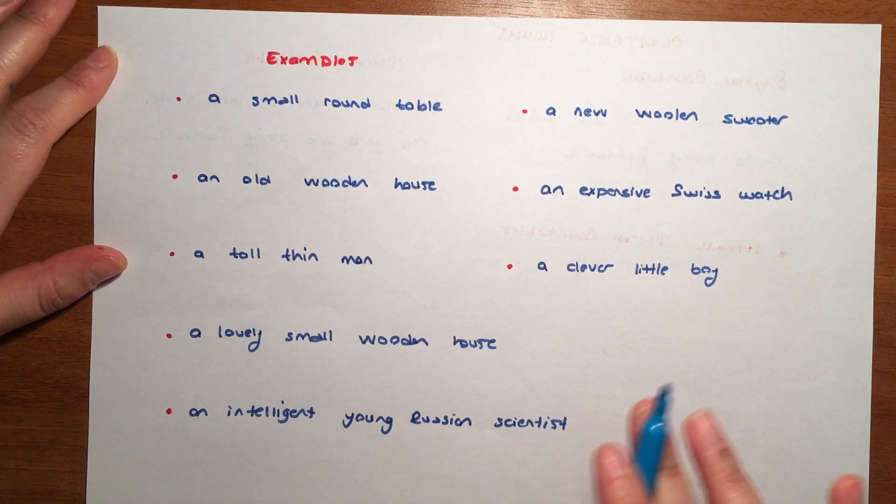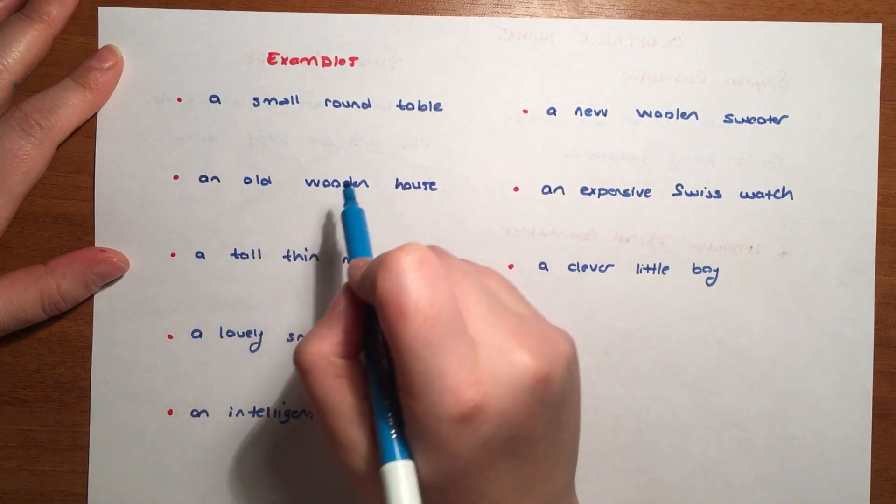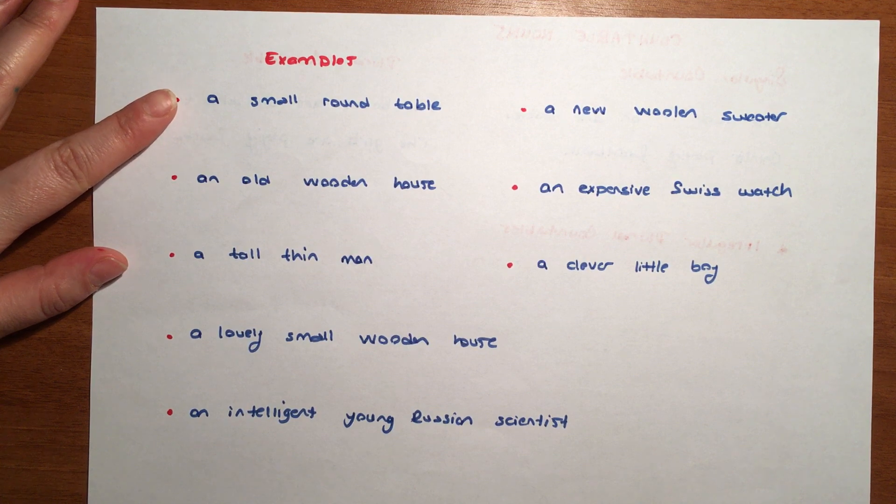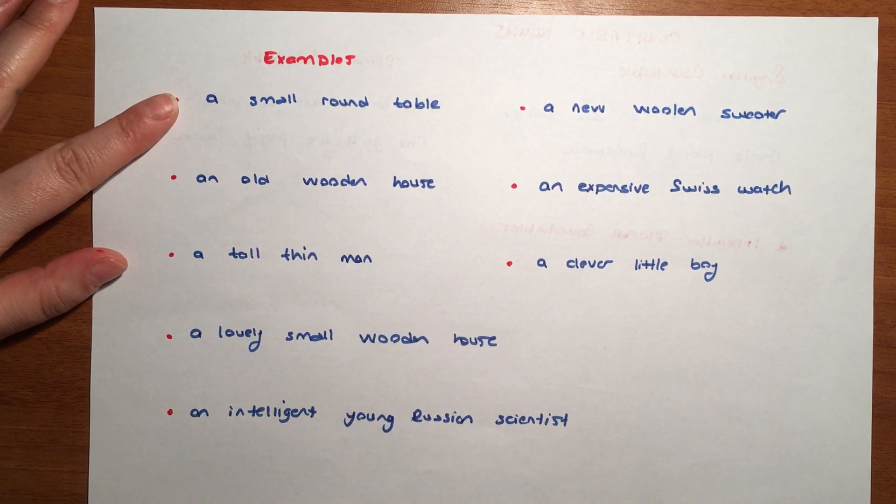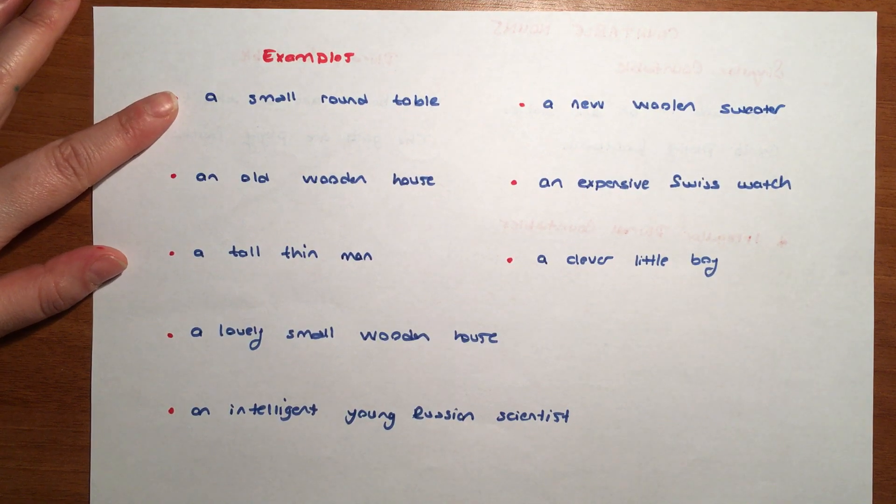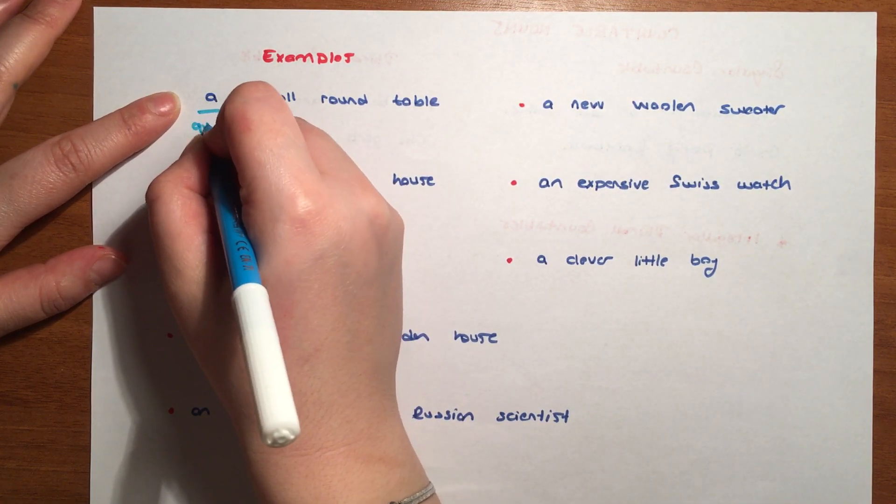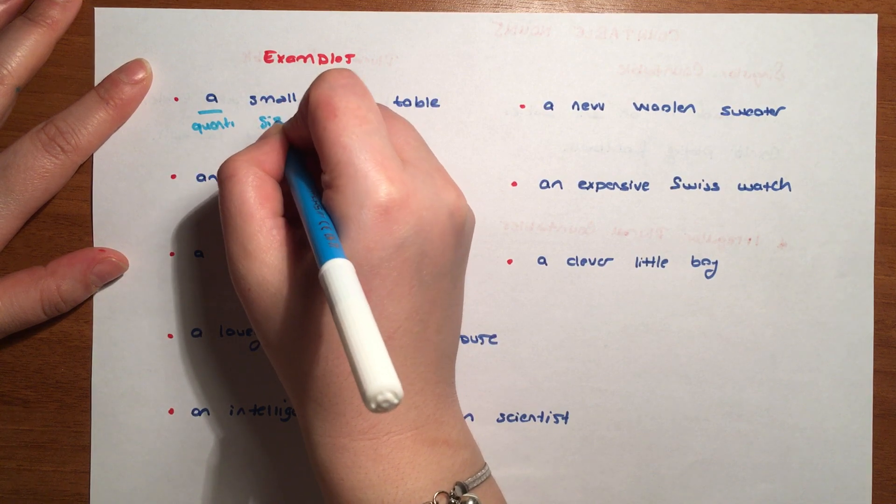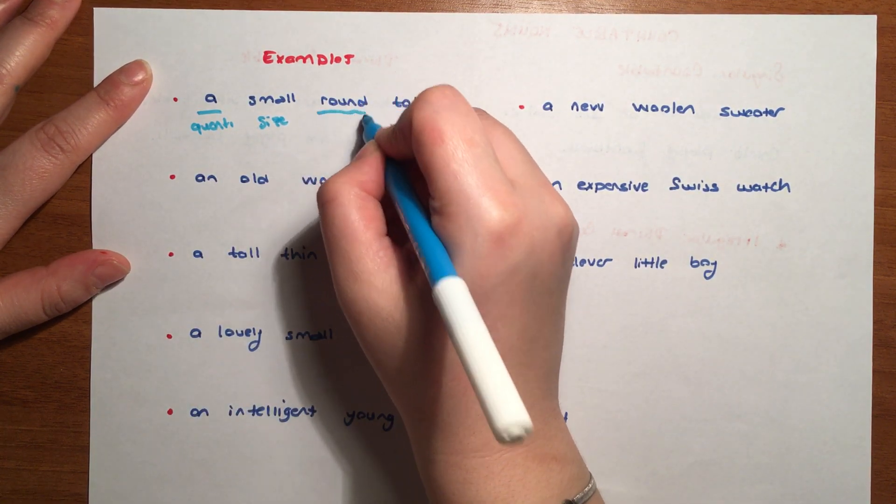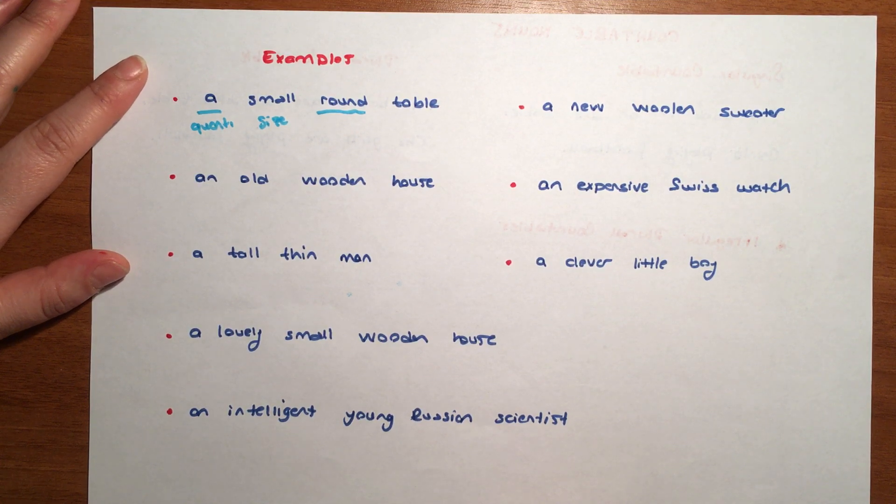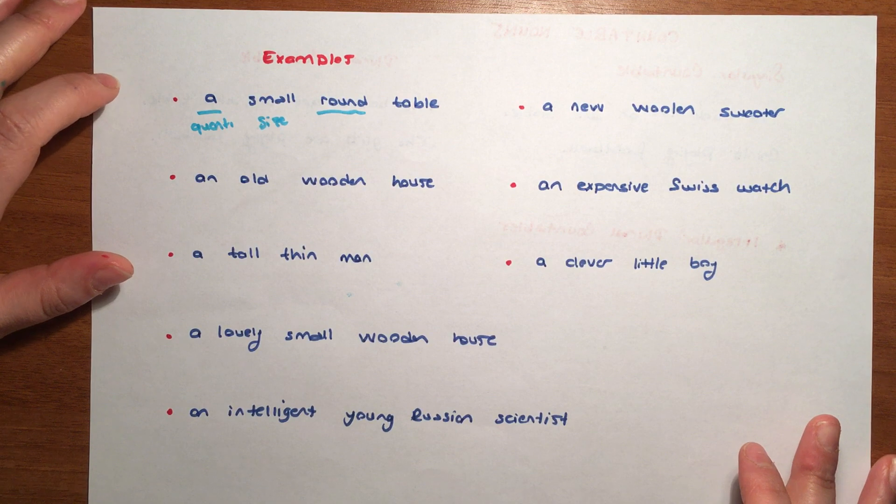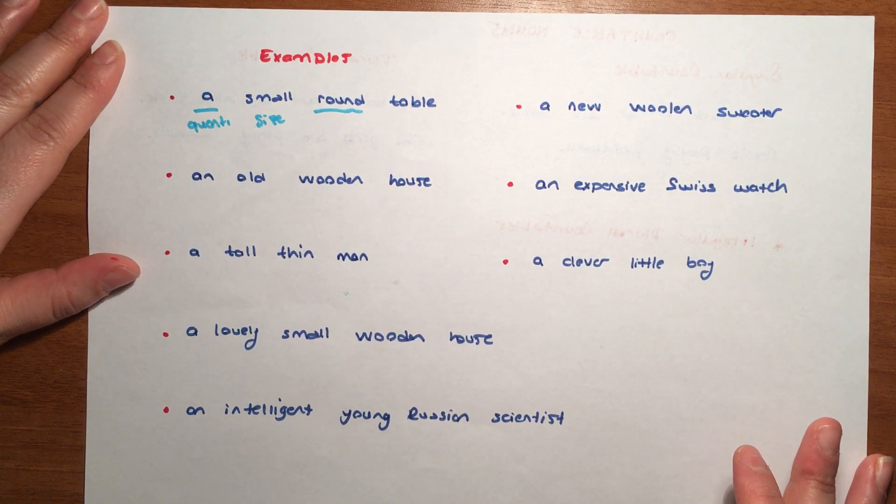On this page you can see the examples. Let's see: a small round table. Here we're specifying the quantity - used one in terms of number. We can call this quantity. Small - what is it specifying here? Its size. We said we use size in second position. Round - skipping the others, what did we go to? We went to shape. What was our next step? It was shape - round table. Small, round table, we said.